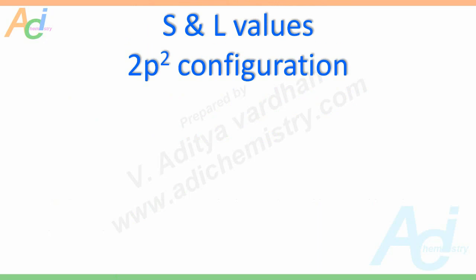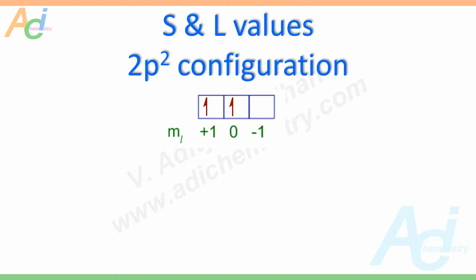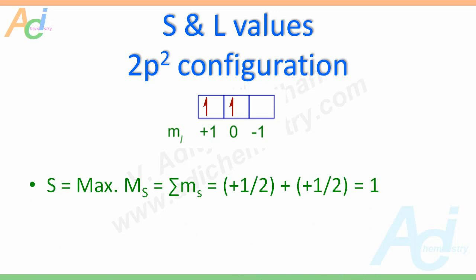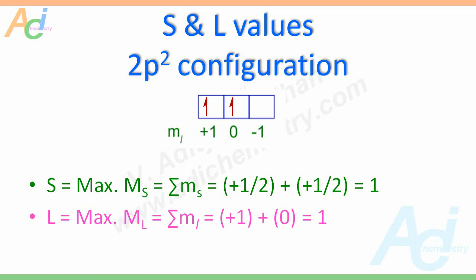For example, for the 2p² configuration, the two electrons are arranged as shown. They are arranged in the 2p sublevel following Hund's rule without violating Pauli's exclusion principle. The two electrons have parallel spins to give maximum ms value, and they are placed in orbitals with ml values equal to +1 and 0 to get the maximum ml value. Thus, S equals 1 and L is also equal to 1.